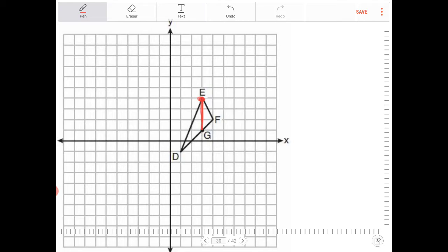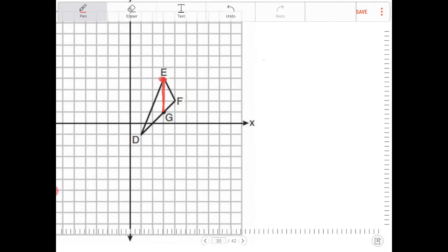So right now DF, the midpoint of DF, can be found by finding the average of the x and y coordinates. So let me do that.